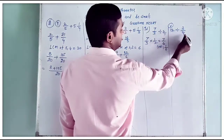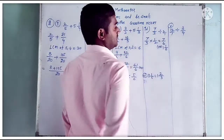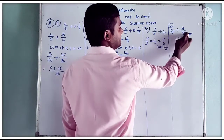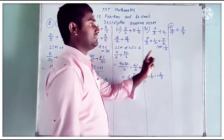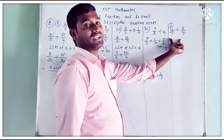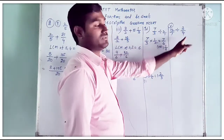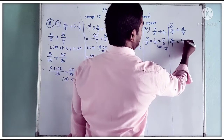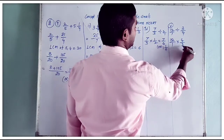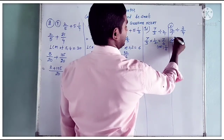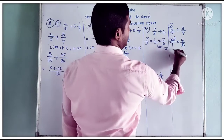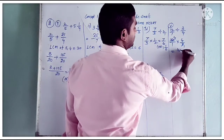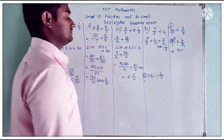Fifth part: 12 divided by 3 by 4. Here 12 has no denominator, so write it as 12 by 1. The divisor fraction is 3 by 4. When dividing two fractions, we do the reciprocal of the divisor. So it becomes 12 by 1 into 4 by 3. Check for cancellation: 3 cancels, giving 4 fours are 16 by 1, which equals 16.